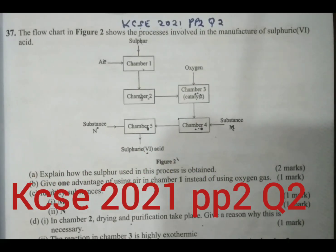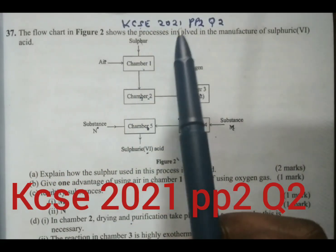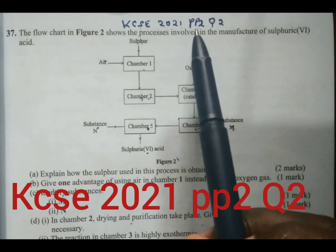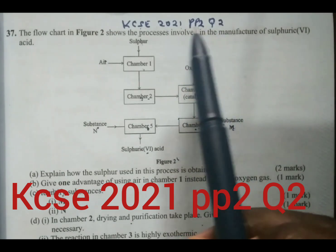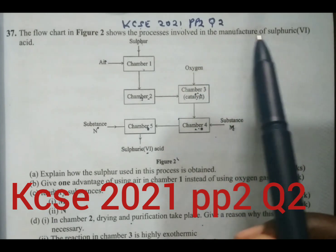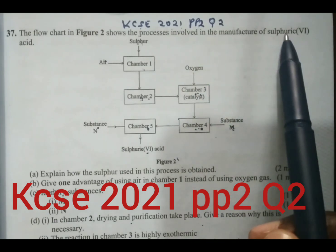Guys, we are looking at KCSE 2021 paper 2, question number 2, a question on the industrial manufacture of sulfuric acid in the contact process.